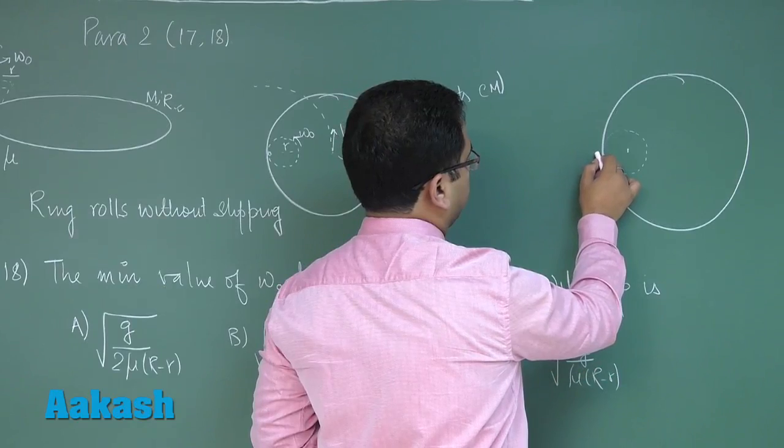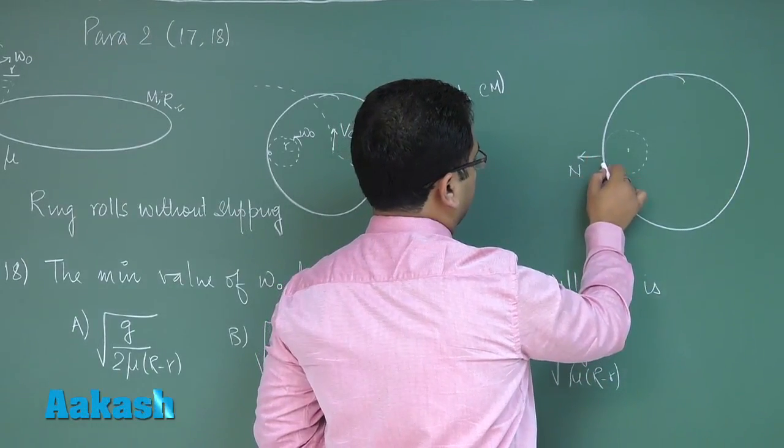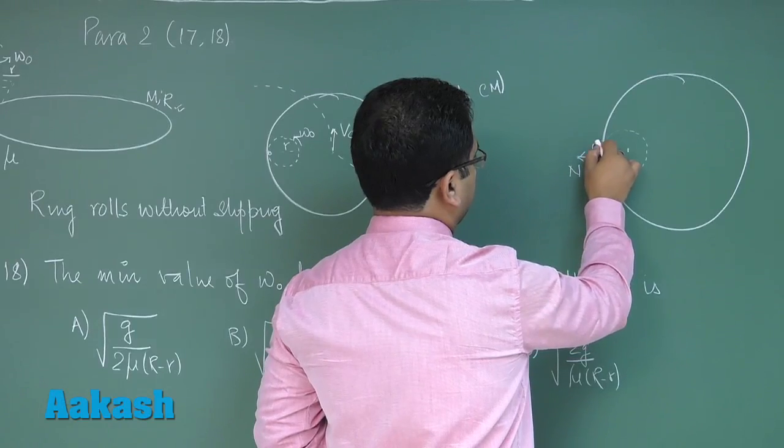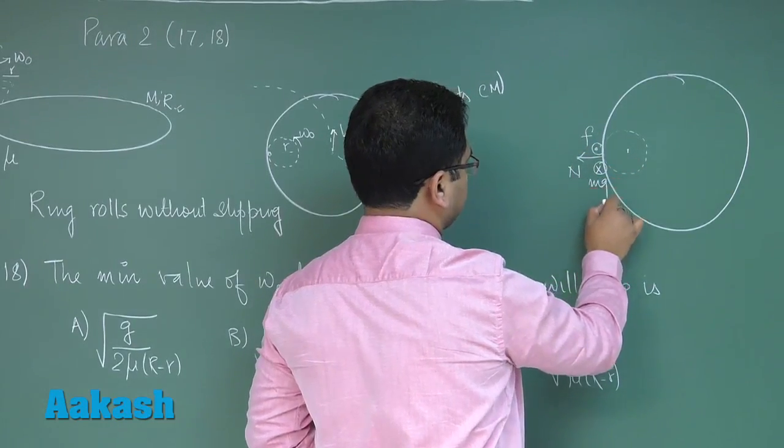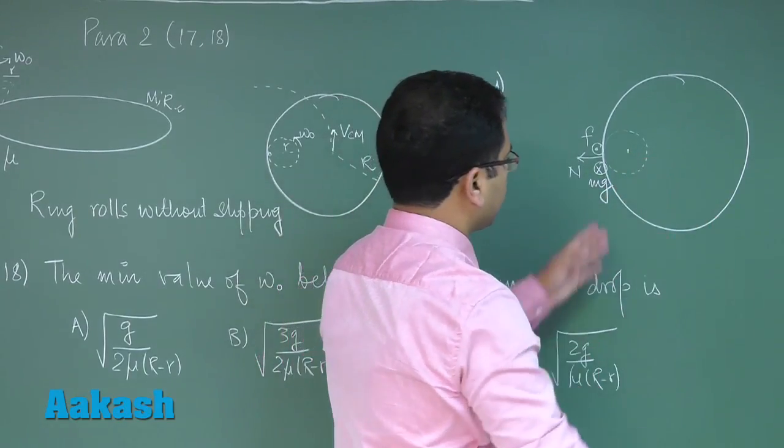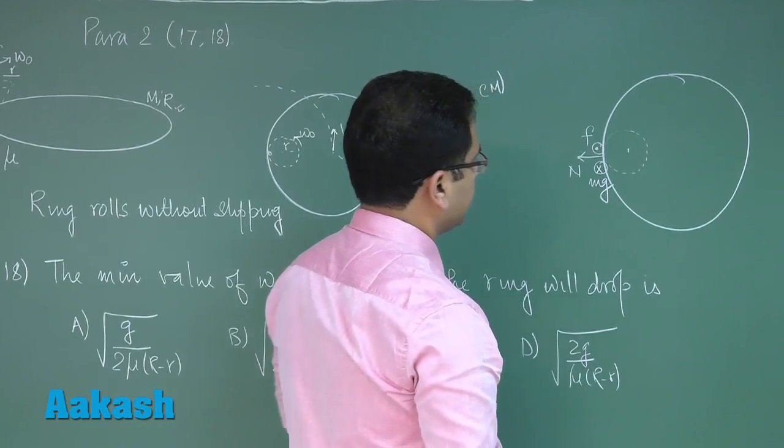Now if I make the free body diagram: the normal reaction would be in this direction, F would be upward, and mg would be in the downward direction. Of course that mg would act here but that hardly matters.